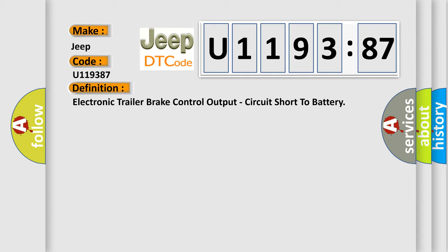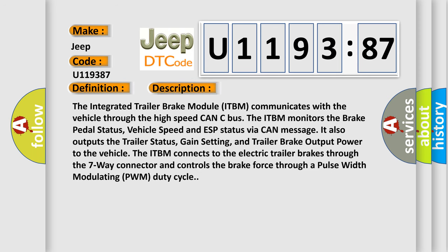And now this is a short description of this DTC code. The Integrated Trailer Brake Module (ITBM) communicates with the vehicle through the high-speed CAN-C bus. The ITBM monitors the brake pedal status, vehicle speed, and ESP status via CAN message. It also outputs the trailer status, gain setting, and trailer brake output power to the vehicle. The ITBM connects to the electric trailer brakes through the seven-way connector and controls the brake force through a Pulse Width Modulating (PWM) duty cycle.